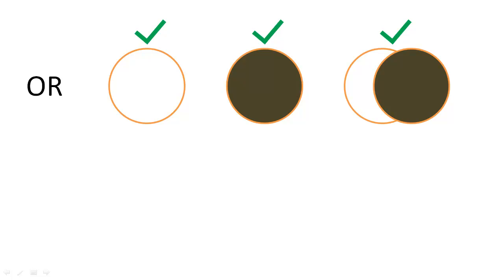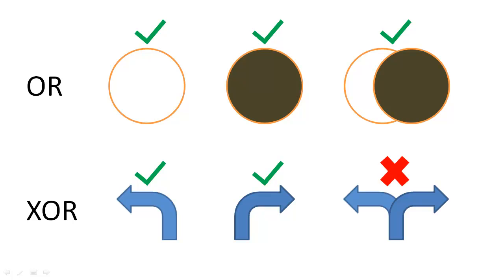If you must decide whether you turn left or right, then this decision implies an exclusive OR because you cannot turn in both directions.